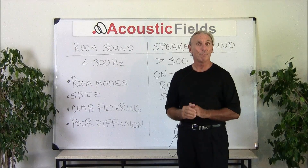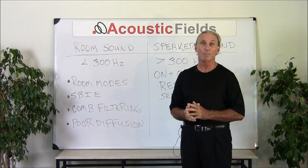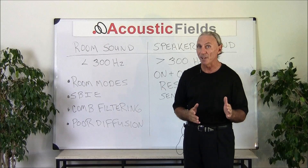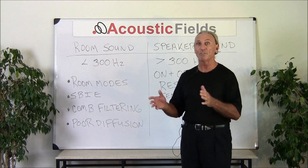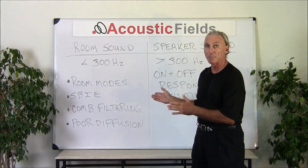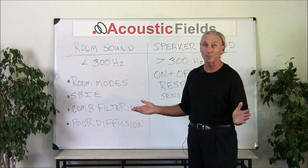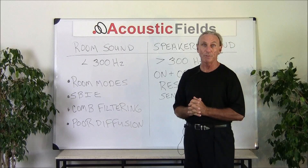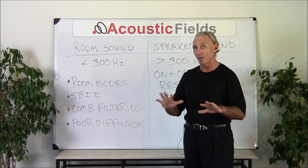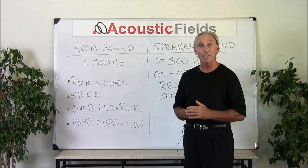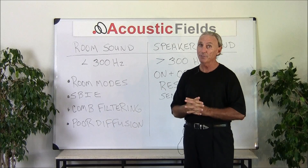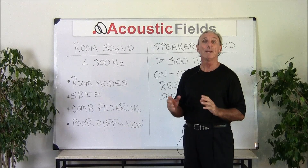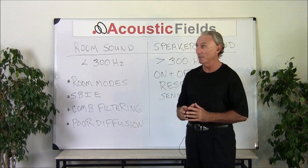Poor diffusion is a very common problem in small rooms. Small rooms need to acoustically sound like larger rooms — they need to sound like free space listening where there are no boundary surfaces at all. In order to do that we have to use diffusion, which will spread the energy out more evenly in the room. That's the goal of diffusion: if the energy is spread out more evenly, the room has a more natural, realistic sound.